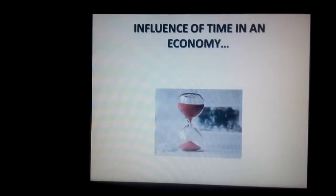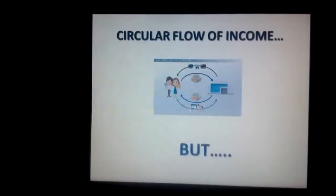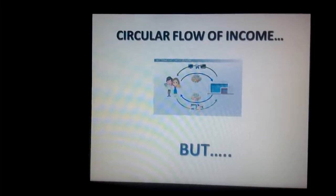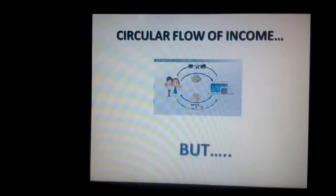In short, the incomes that people earn as owners of factors of production are used by them to meet their demand for goods and services. So, we can see a circular flow here, facilitated through the market. Simply put, the firms' demand for factors of production creates payments to the public. In turn, the public's demand for goods and services creates payments to the firms and enables the sale of their products. The social acts of consumption and production are intricately linked. In fact, there is a circular causation here.